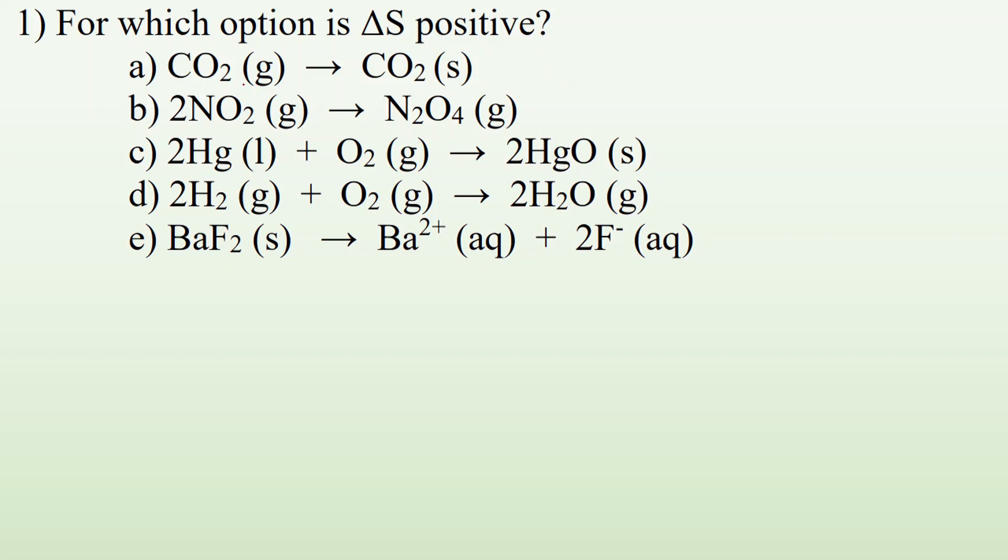So here we have a carbon dioxide gas becoming carbon dioxide solid. We're going from a gas to solid is a negative change in entropy, right? Gas is high entropy moving around, spread out, solids packed together, not flowing past each other at all. So entropy went down.